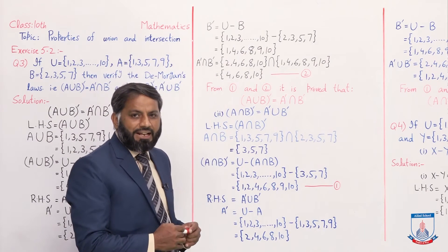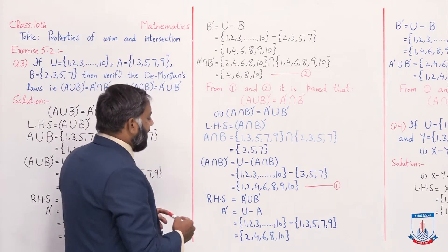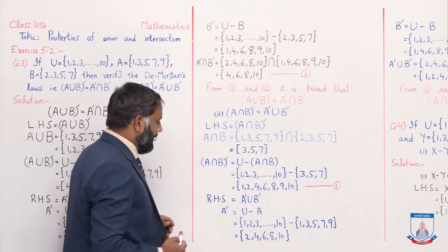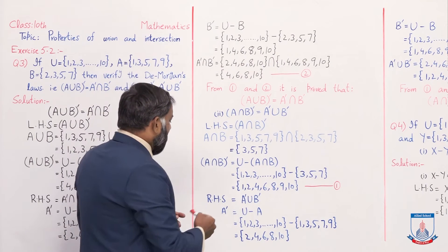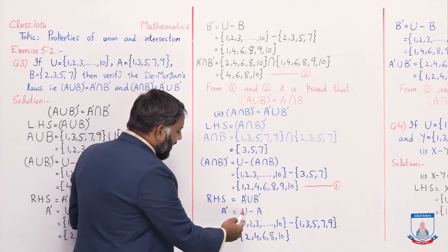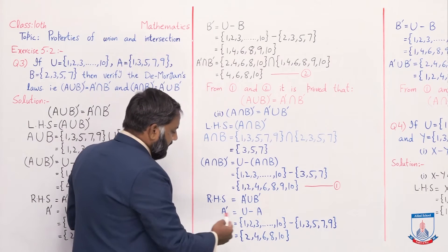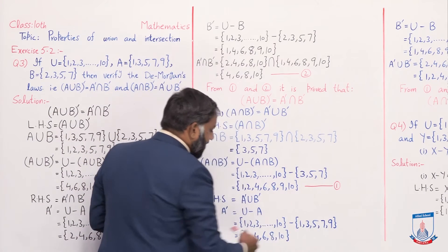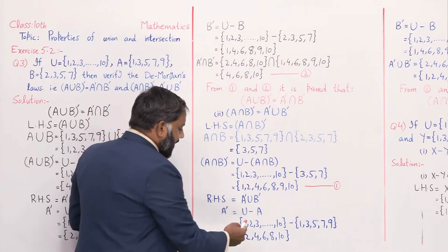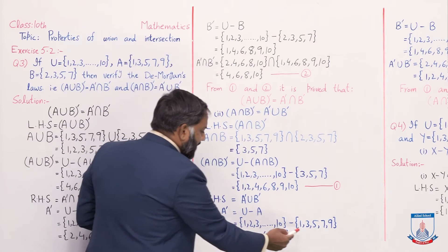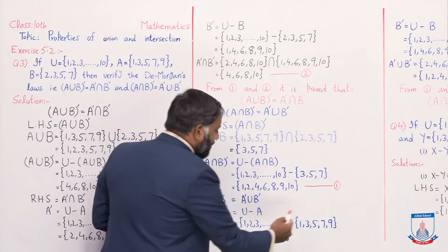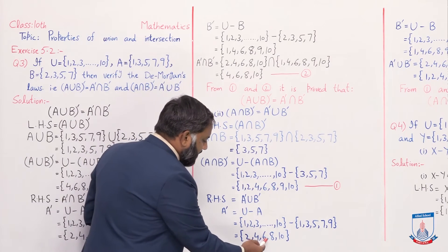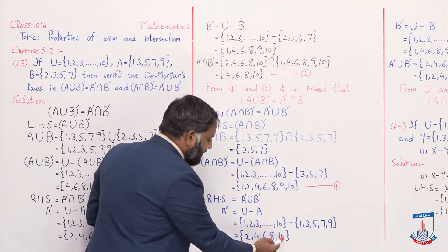Now we solve the right hand side: A'∪B'. First we find A': U minus A. Universal set minus set A. The elements of the universal set not in set A are: {2, 4, 6, 8, 10}.